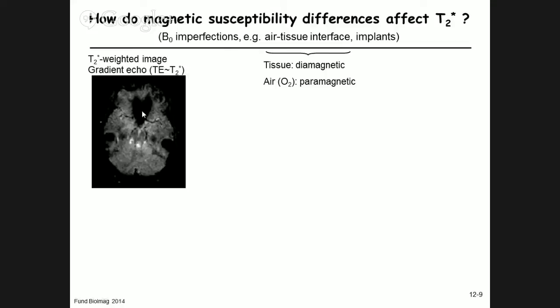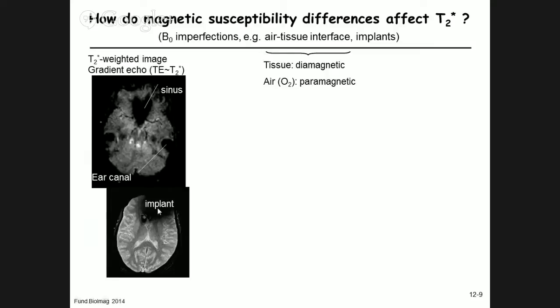The sinus effect is less pronounced if you have a cold because the space is filled with liquid. We also see that a medical implant creates a signal dropout and produces artifacts — areas in the image with no signal. So how can one minimize these susceptibility effects?